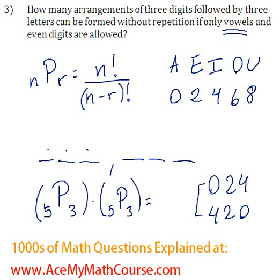Excellent, so 5P3, 5 permutation 3, is just equal to 60. I am going to assume that you are very comfortable using this formula. And 5P3 is also 60. 60 times 60 equals 3,600.